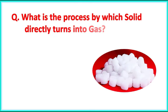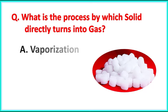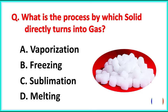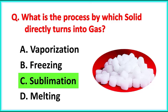What is the process by which solid directly turns into gas? The correct answer is Option C. Sublimation.